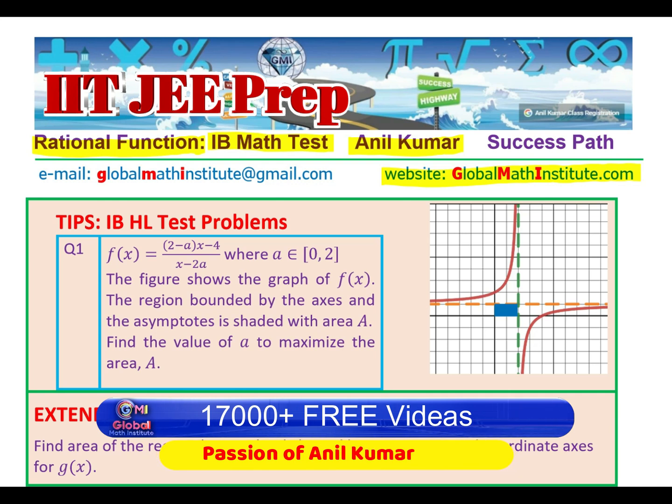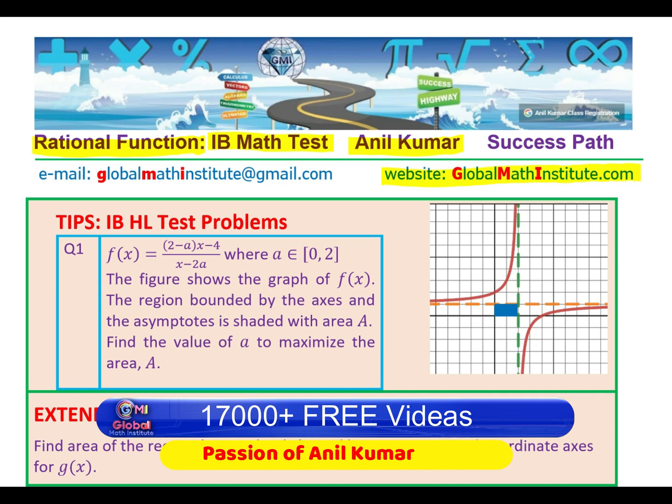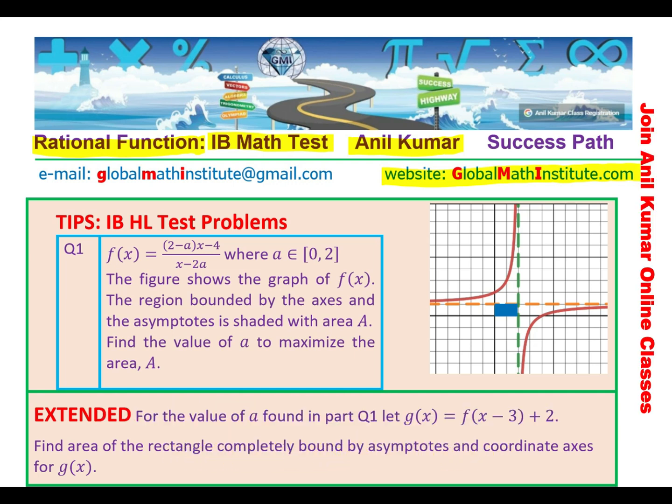So the question here is that the function is given to you, which is f(x) = (2-a)(x-4)/(x-2a), where a belongs to real numbers between 0 to 2. The figure shows the graph of f(x), the region bounded by the axes and the asymptotes is shaded with area A. So the shaded area is shown in blue here.